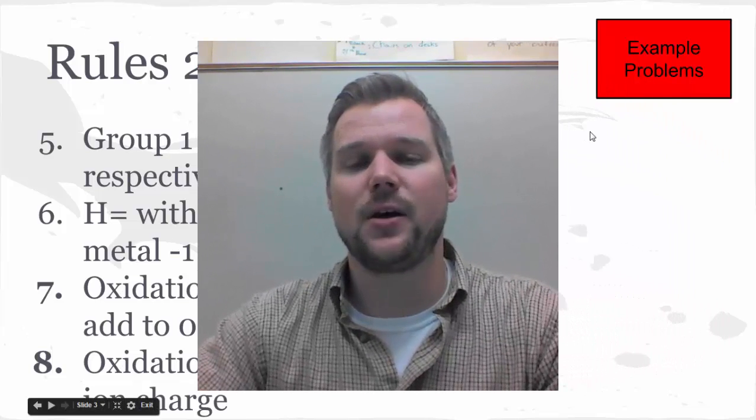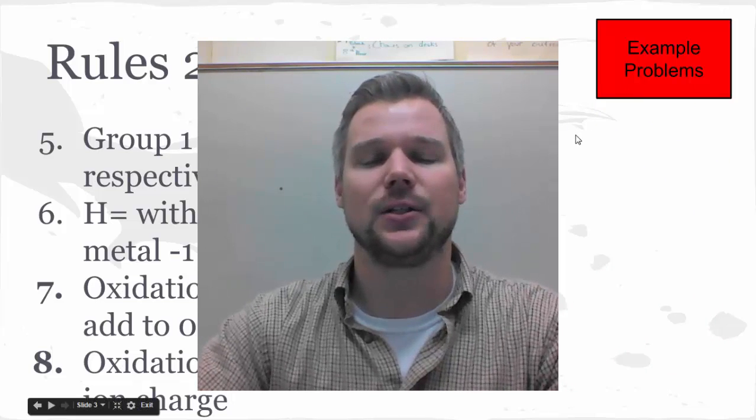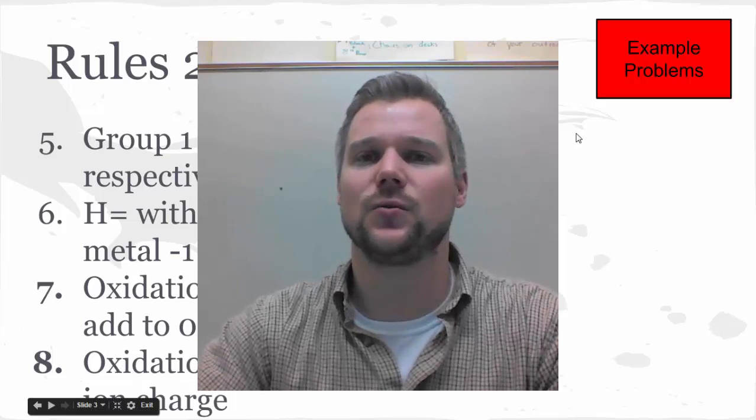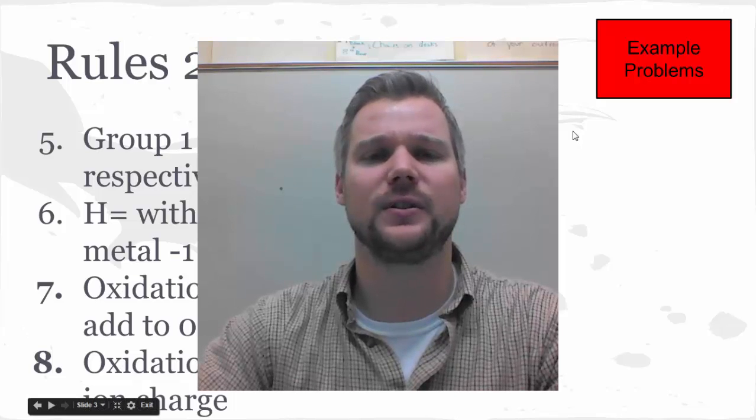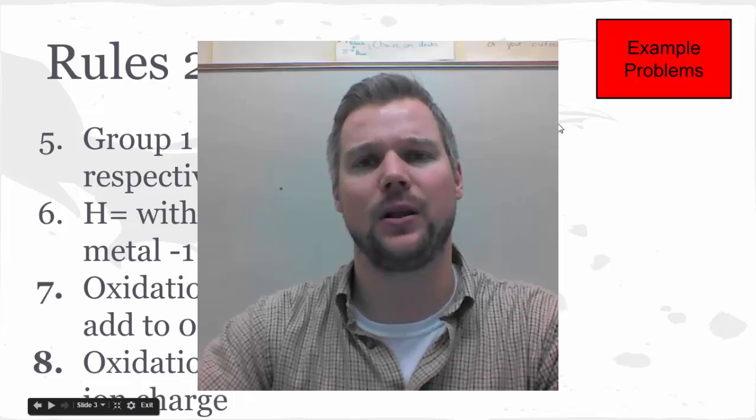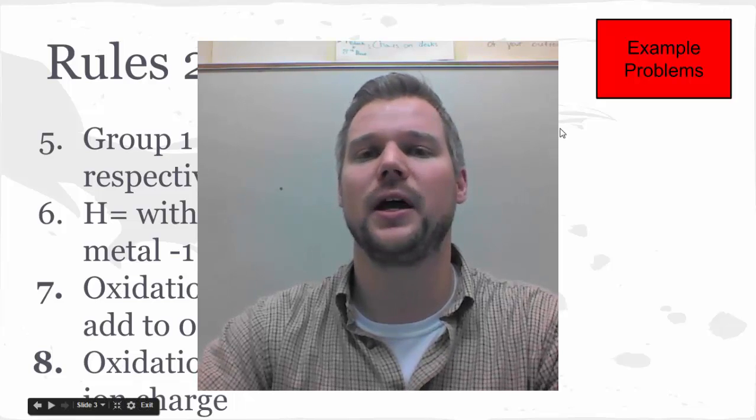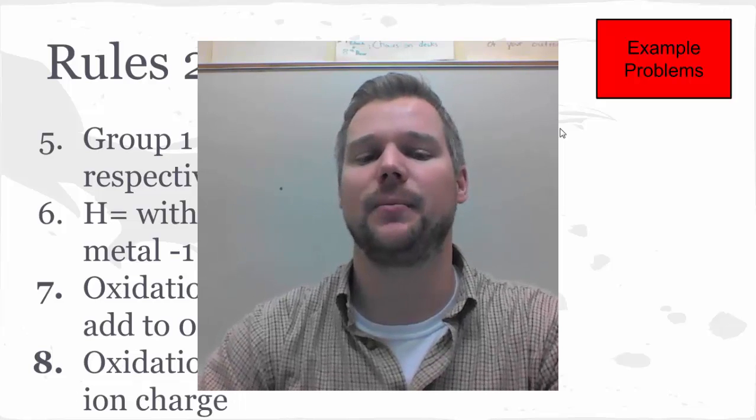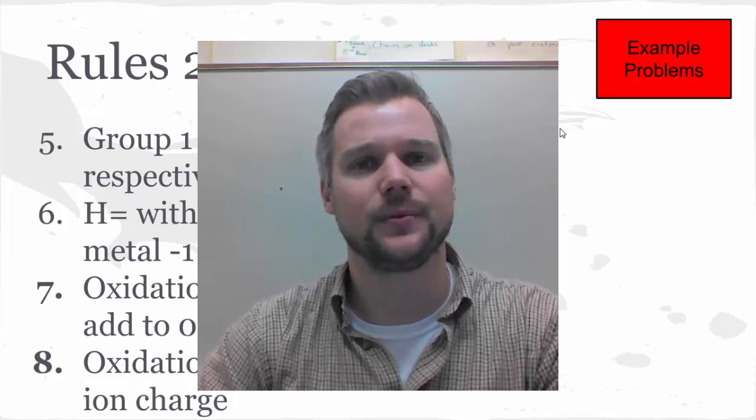After watching this video, you should know there are some rules you'll need to use for determining oxidation numbers of atoms inside a compound. When it comes to these rules, some are more important than others, specifically knowing that O = -2. We're going to use that one a lot. Also, oxidation numbers in a compound add to zero, and oxidation numbers in a polyatomic ion add to the polyatomic ion charge. Practice those rules, and I hope this helps.